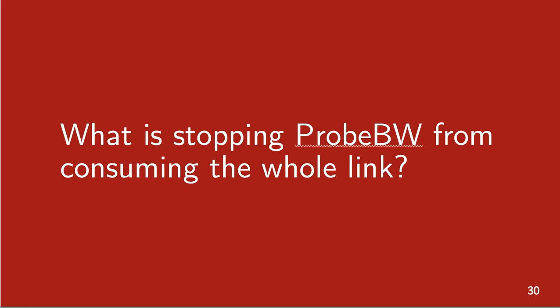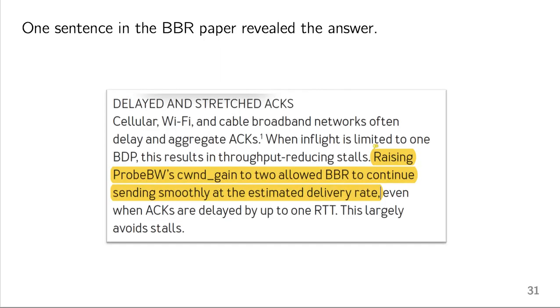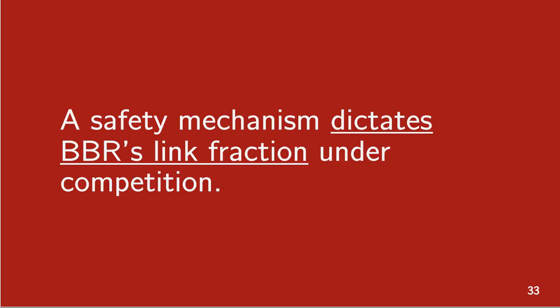So we really had to go digging to figure out what's stopping probe bandwidth here. You know, what is it? And one sentence in the BBR white paper by Google revealed the answer and I've highlighted it for you here. So it turns out BBR limits the amount of data in flight to 2 BDP, which is essentially a safety mechanism in case of delayed and stretched acts to make sure that BBR can still utilize the full available bandwidth. So there's just one little section here about this minor implementation detail. But surprisingly, the safety mechanism, this minor implementation detail, completely dictates BBR's link fraction under competition. And this is extremely surprising for us.